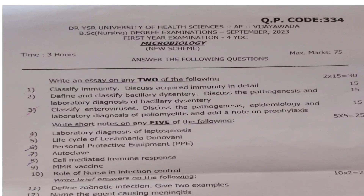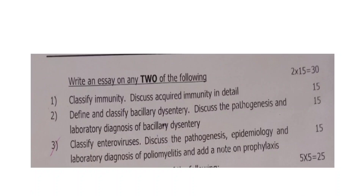The essay section has 15-mark questions — you have to answer 2, so 2 into 15 equals 30 marks. For short notes, you have to answer 5, so 5 into 5 equals 25 marks. For brief answers, there is no choice — you have to answer all 10, so 10 into 2 equals 20 marks. Let's see each section separately.